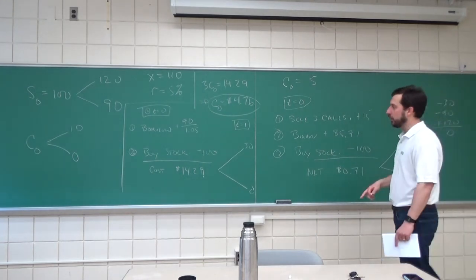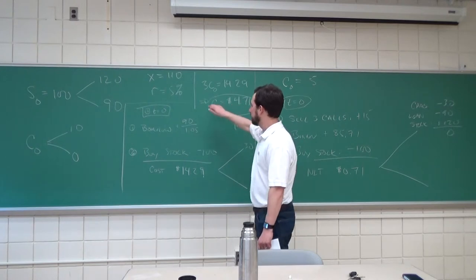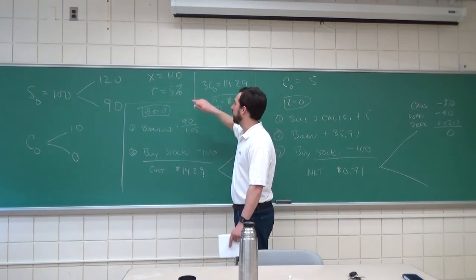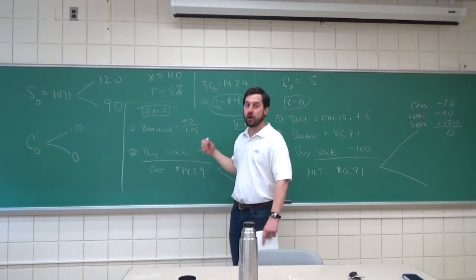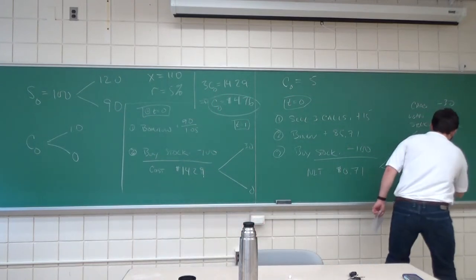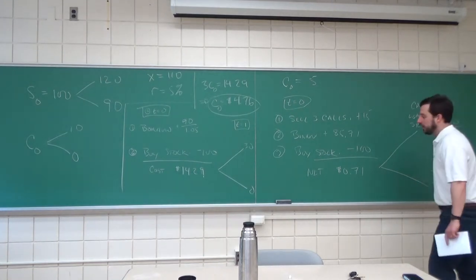In the low state, the calls are going to be worth zero, the stock is worth zero, and we owe... I'm sorry, the calls are worth zero, the stock is worth 90, and we're going to owe 90. So, this is zero, negative 90, 90, zero. So, here's our arbitrage.